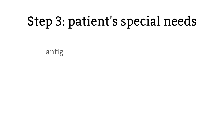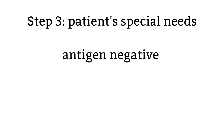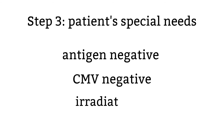Step 3: Check patient special needs. Some patients need irradiated blood products, while others may need antigen-negative or CMV-negative products. It is important to check for those specific requirements because patients could have adverse reactions to the products even if the correct blood type was given.